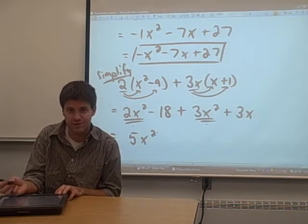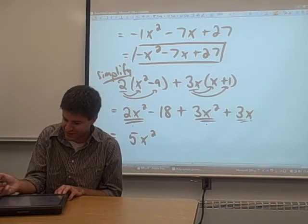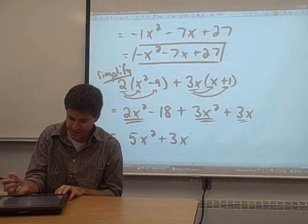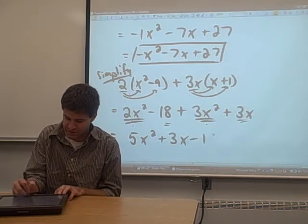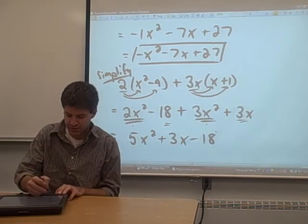Everything else you can just copy down. The 3x, I'm going to copy down, and the negative 18, I'm going to copy down. So there's your answer.